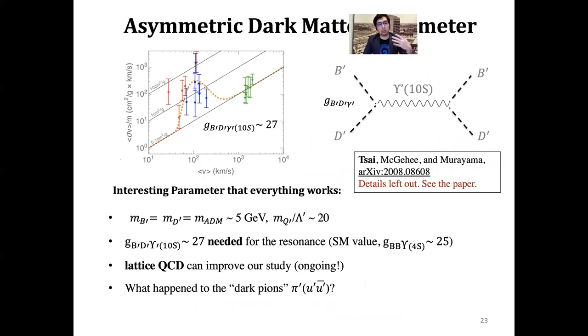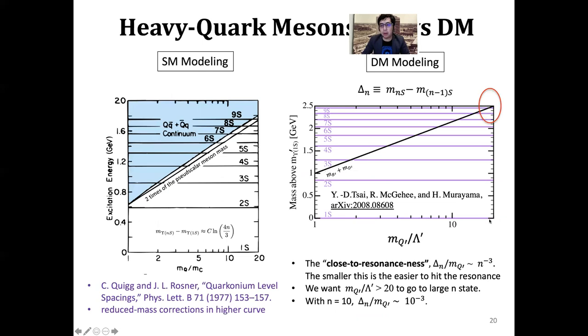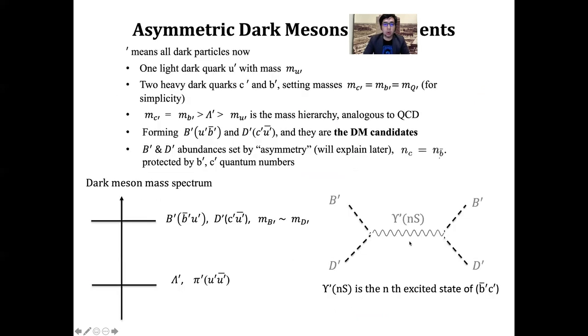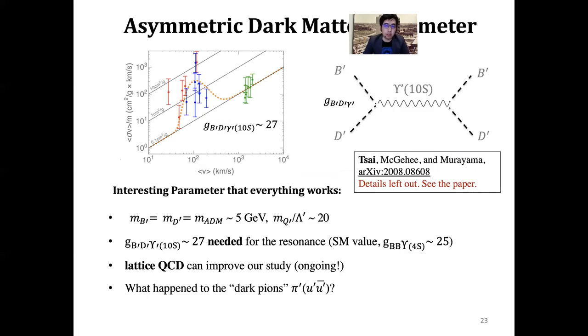Now we have the dark matter to be 5 GeV. Lambda QCD has to be pushed down because I want my quark to be much heavier, about 20 times heavier than lambda QCD. Since I fixed my quark mass to be about 5 GeV, I need to push down my lambda QCD to 20 times. So my lambda QCD is about 100 MeV level, very similar to our actual standard model lambda QCD. We also find, fixing to the astrophysical observations, the g_BB-Upsilon has to be about 27, which is very close to 25, the standard model value. So it's a non-trivial fact that is very interesting.